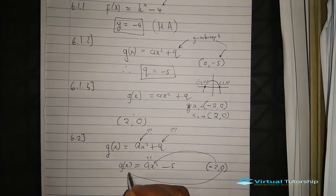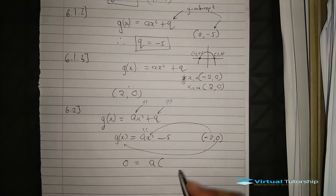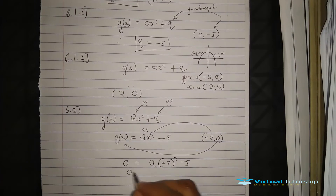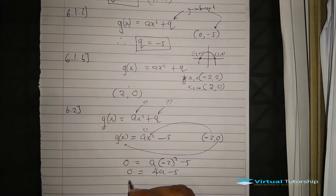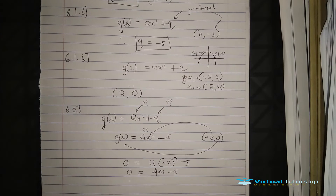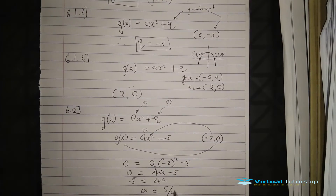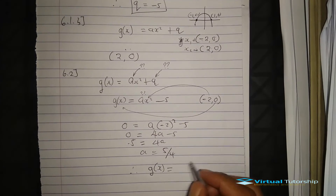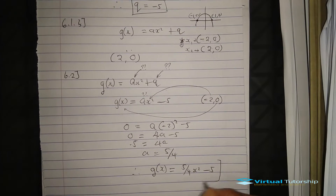Substituting x equal to minus two and y equal to zero: zero equals A times negative two squared minus five. So zero equals four A minus five. Transposing: five equals four A, therefore A equals five over four. Our final equation is G(x) equal to five over four x squared minus five.